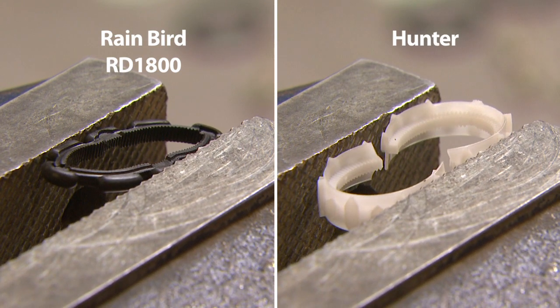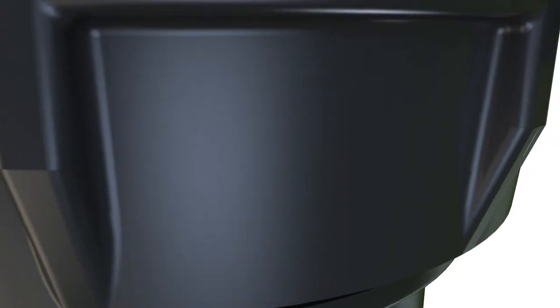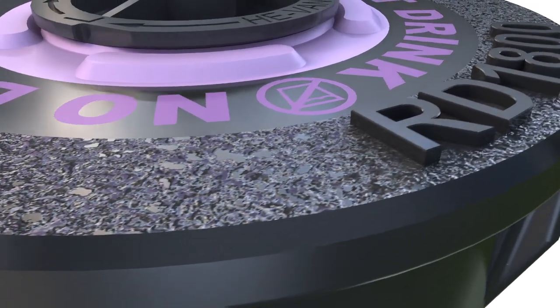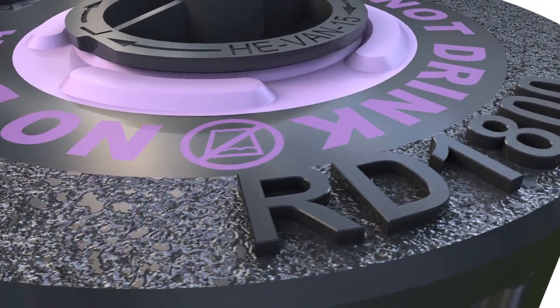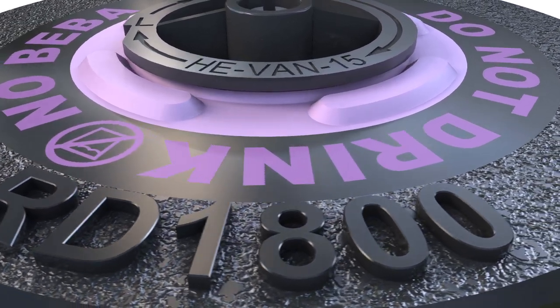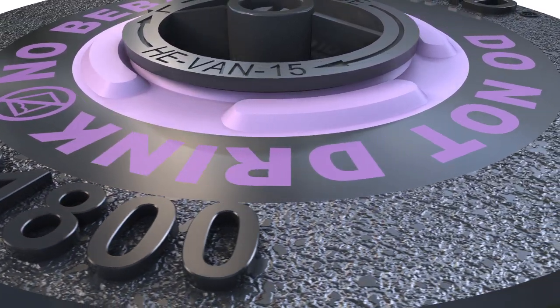With the RD-1800, we've left nothing to doubt. Reclaimed models feature a patent-pending design that warns the public of non-potable water use. The RD-1800 offers a unique combination of a purple wiper seal, the international do-not-drink symbol, and standard English and Spanish warnings.